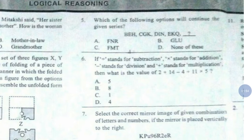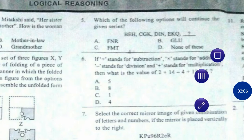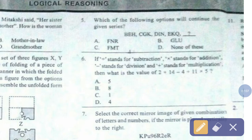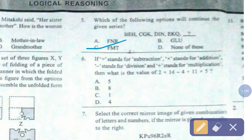Question number 5. Which of the following options will continue the given series? B, E, H, C, J, K, D, I, N, E, K, Q. The correct answer is option number C — F, M, T.